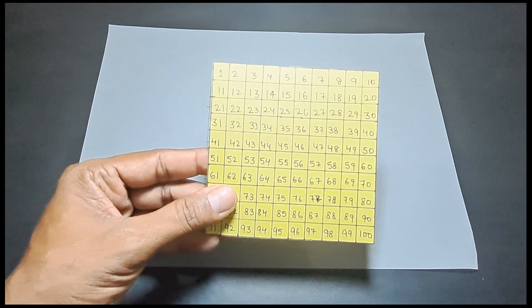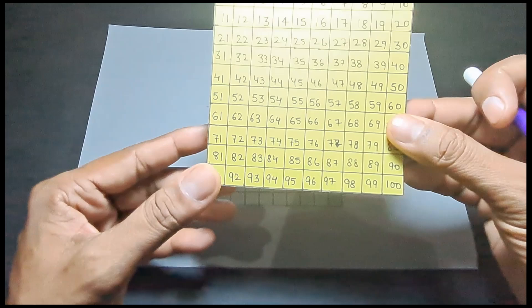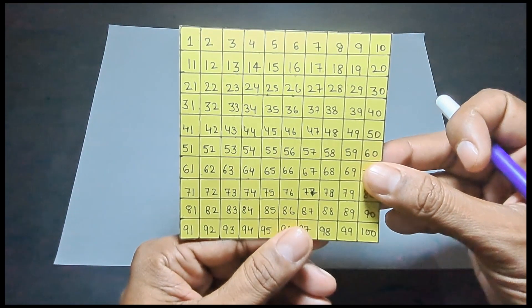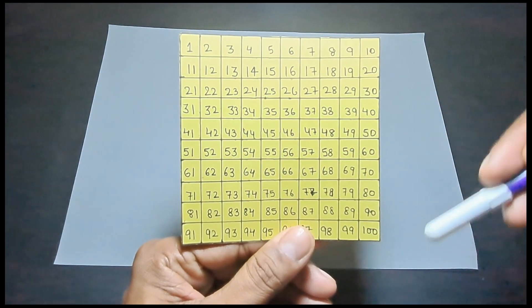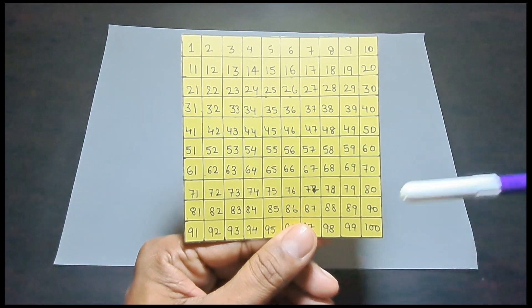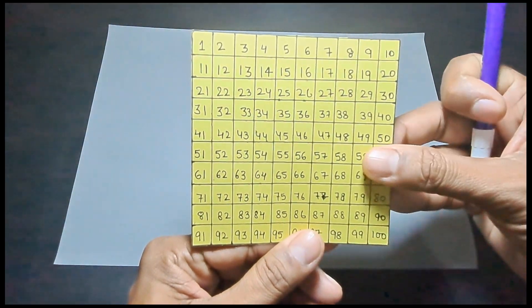To perform this activity on prime numbers, as you can see here we have cut out a square shaped piece of chart and we have drawn a 10 by 10 grid on the piece of paper.